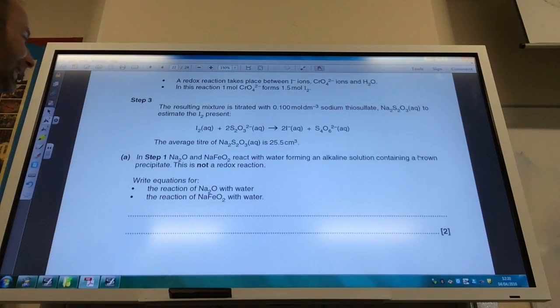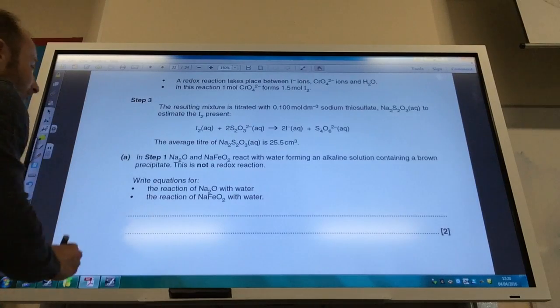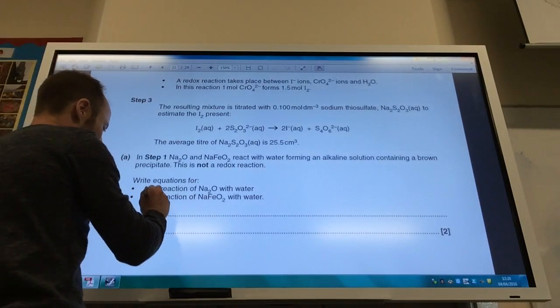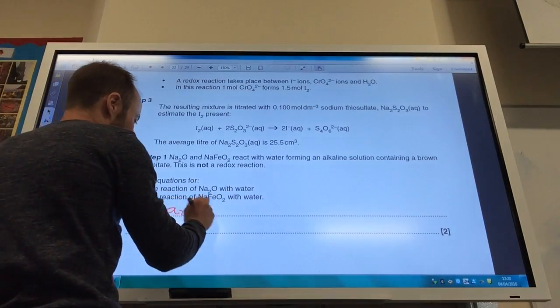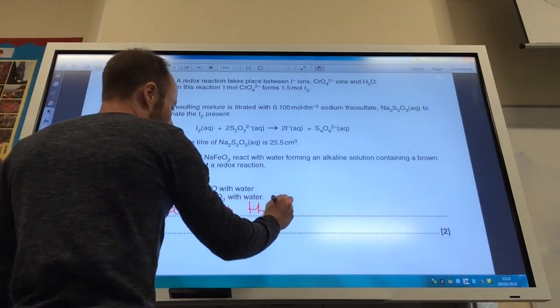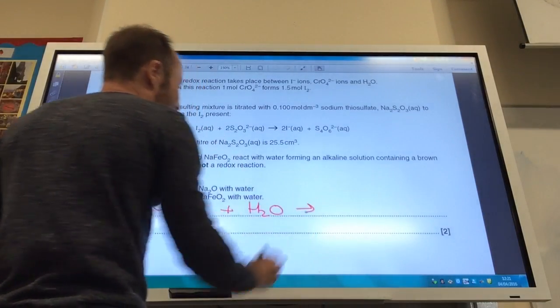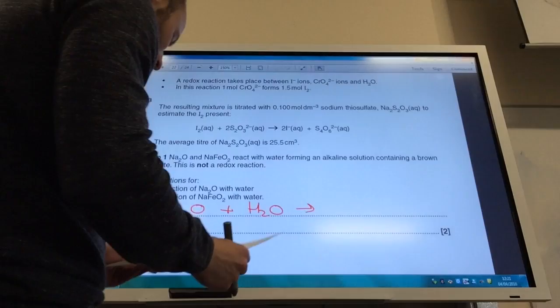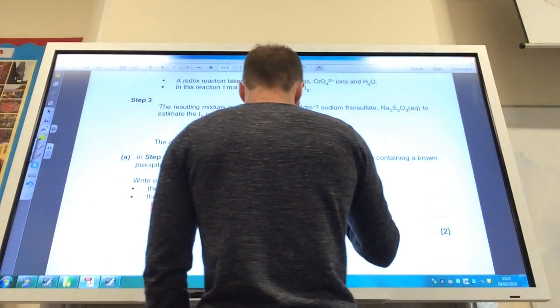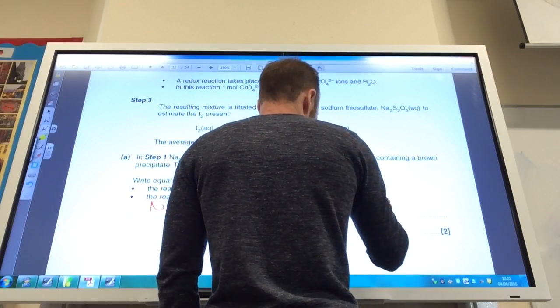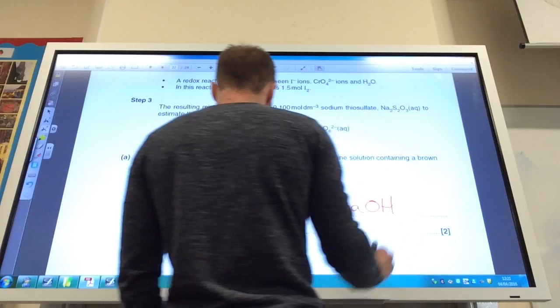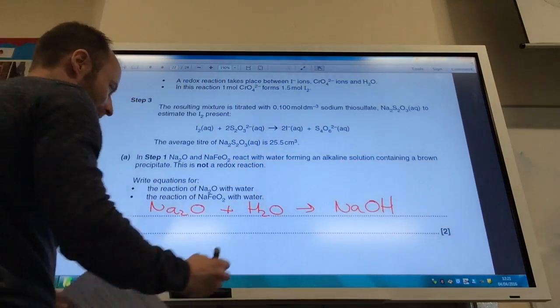Sodium oxide and NaFeO2 react with water to form an alkaline solution containing a brown precipitate. It's not a redox reaction. Write equations for the reaction of Na2O. So Na2O reacting with water produces an alkaline solution. So the alkaline solution looks like it's going to be NaOH and I'm going to have to have two of those.